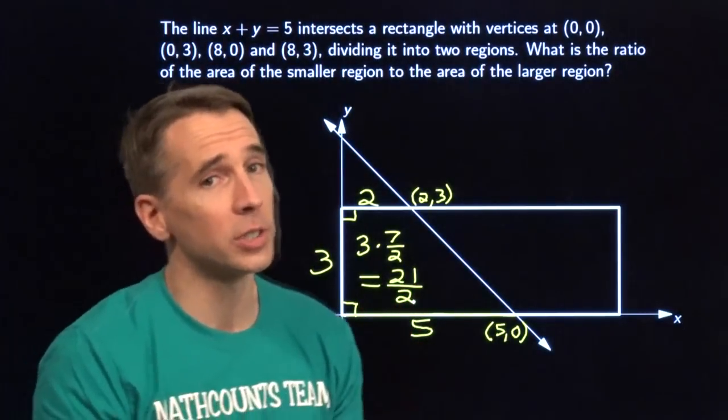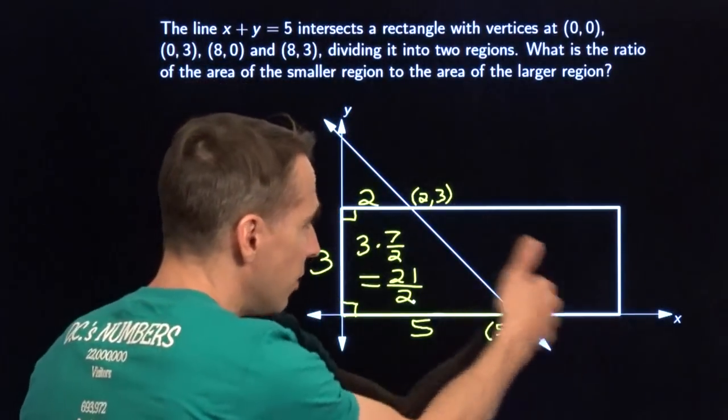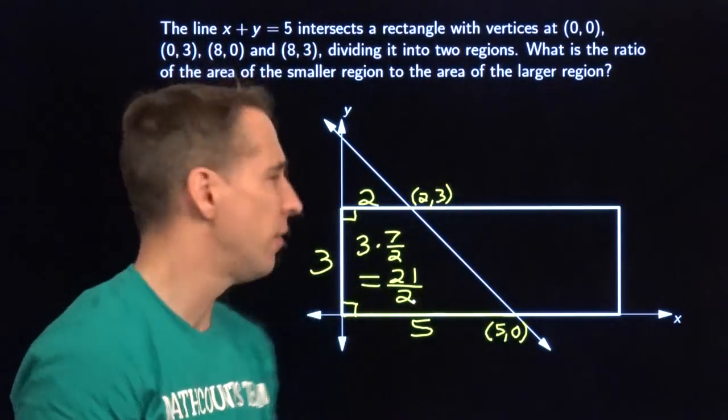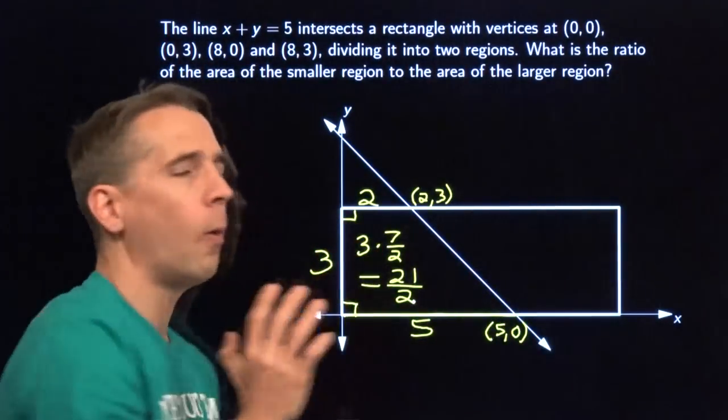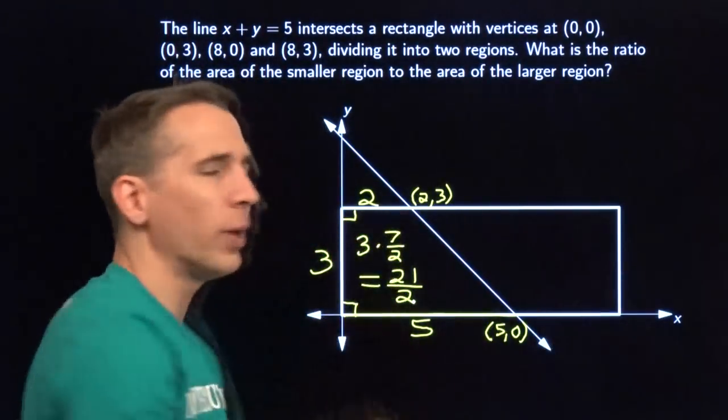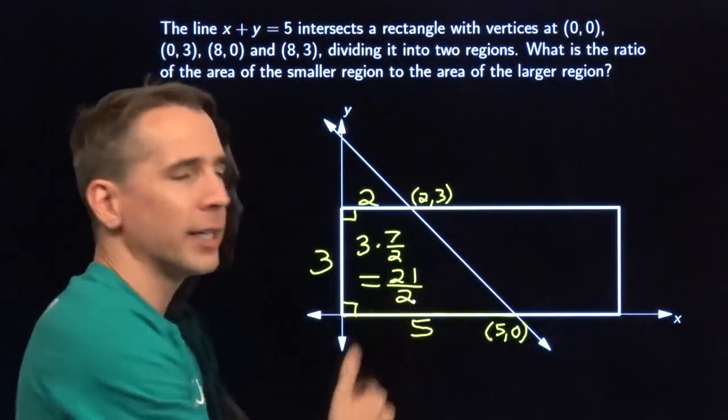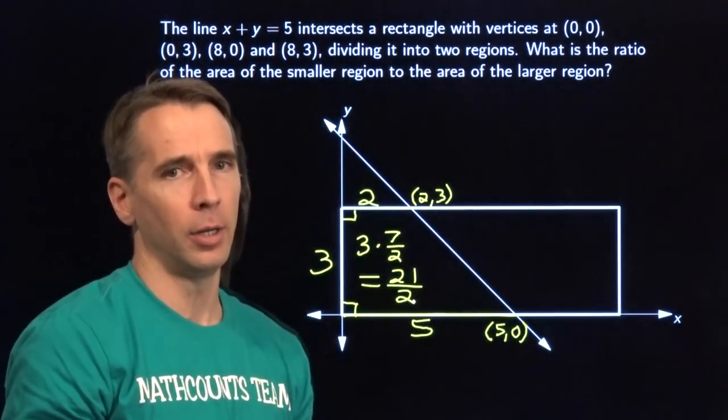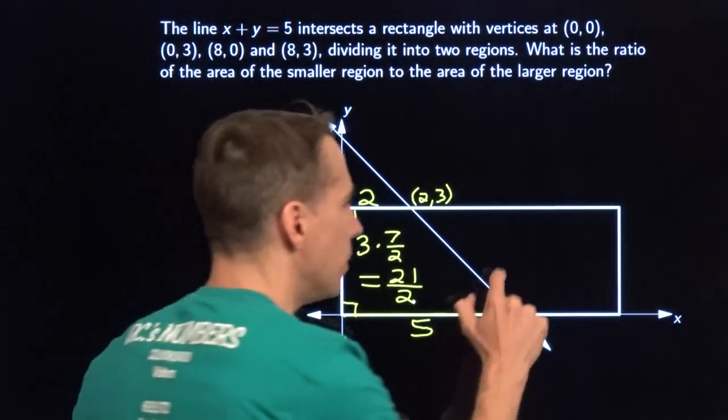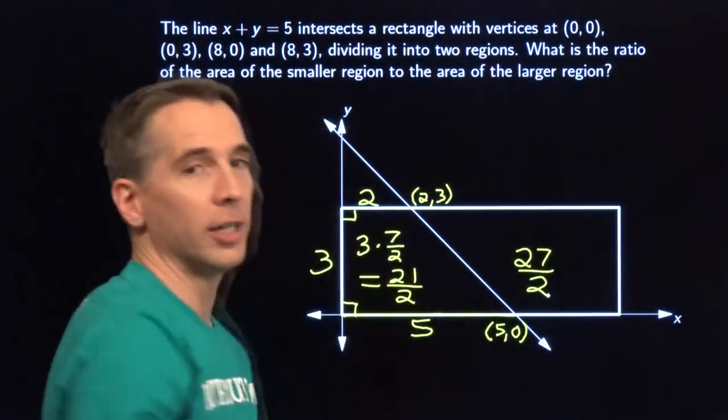Now my man Harvey here has always taught me to always look for some slick ways to solve some problems. Now I could go ahead and find some dimensions over here, find the other area. But here's my slick way. Check this out Harvey. I know the area of the whole rectangle. This is 3. This whole thing is 8. So the area of the whole rectangle is 3 times 8 is 24. And I just subtract off this piece to get that one. 24 is 48 over 2. Subtract off the 21 over 2. And we have 27 over 2 as the area of this other piece.